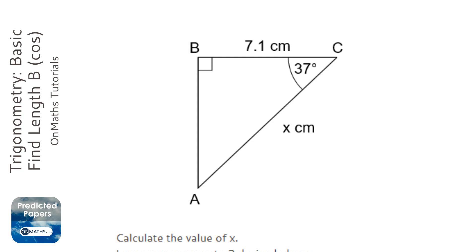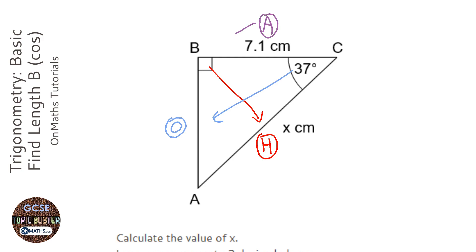So the first step of trigonometry is go across from the right angle, and that's the hypotenuse, go across from the marked angle, the one given to us in the question, and that's the opposite, and the one left over is the adjacent, and it's next to the right angle and the marked angle.